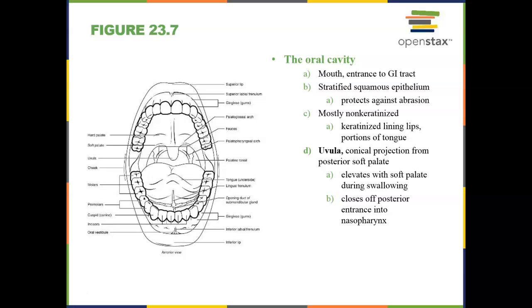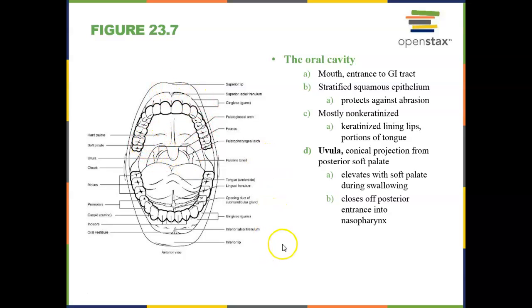The uvula is the tiny structure that hangs off the back of the soft palate, and its function is to elevate and close off the nasal pharynx so that food doesn't go upwards and out our nose. I'm sure that has happened to everybody at some point in their life — food or drink, depending.